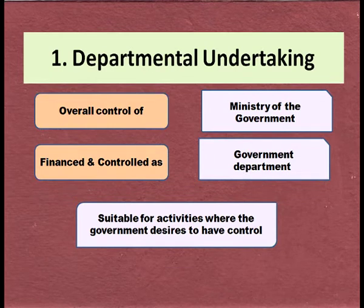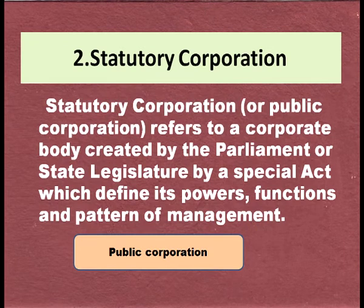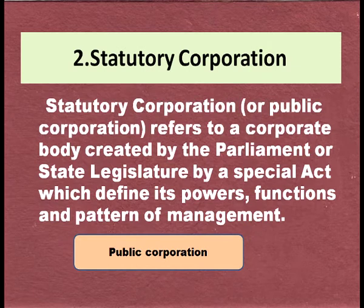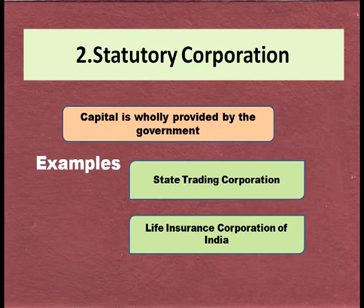In detail, a departmental undertaking is one where overall control of the Ministry of Government is present. It is financed and controlled as a government department, and is suitable for activities where the government desires direct control. The second form is the statutory corporation or public corporation — a corporate body created by Parliament or state legislature through a special act, which defines its powers, functions, and pattern of management. Examples include the State Trading Corporation and Life Insurance Corporation of India.